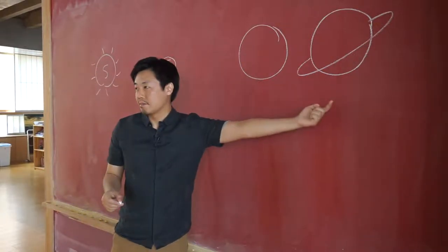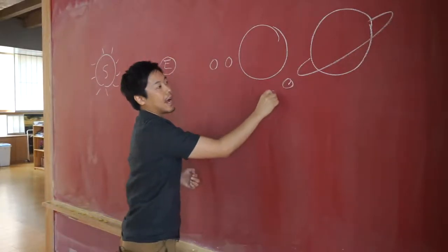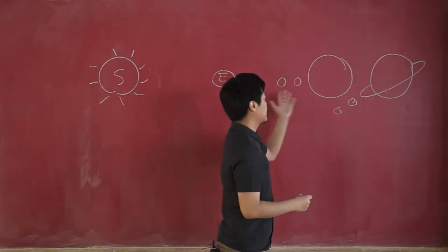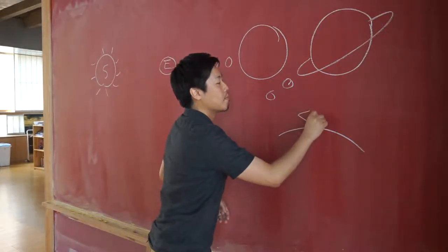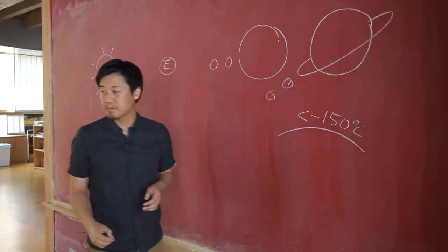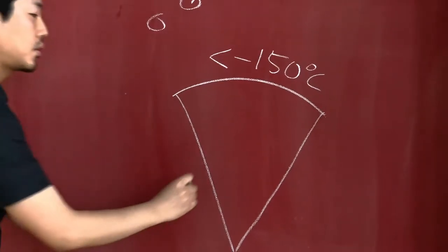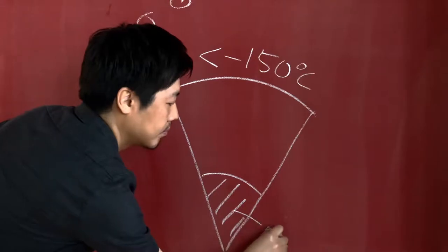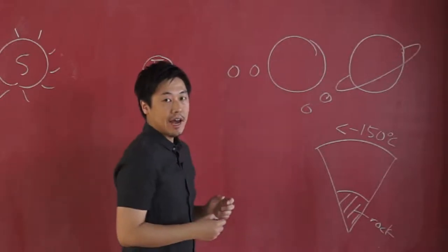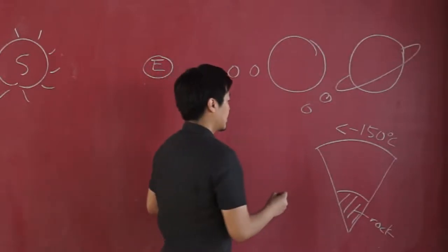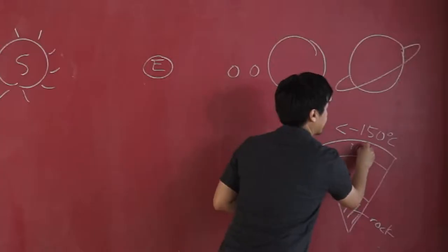Jupiter and Saturn, these gas giants, are known to have icy moons, icy satellites. On the surface of these icy moons, the temperature is extremely cold, less than minus 150 degrees Celsius. However, its interior can be warm due to the heat from the deep rocky core. In fact, some of these icy moons are known to have subsurface liquid ocean beneath the icy surface.